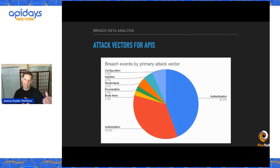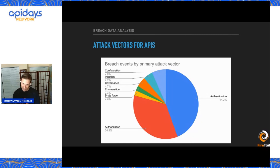If you're familiar with the OWASP API Top 10, you'll see things like BOLA or BFLA — broken object level authorization and broken function level authorization. From an authorization perspective, it's not only about what can I do, it's also about what data can I access. There's even an intersection of those: data that I can access that I can do some things with, versus data that I can access that I can do other things with.